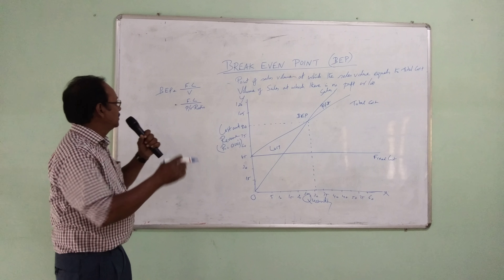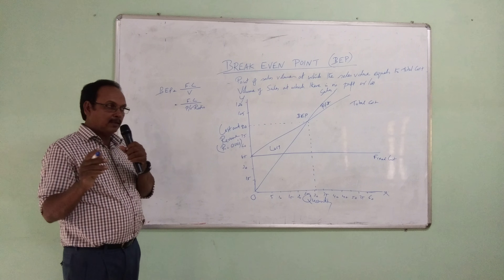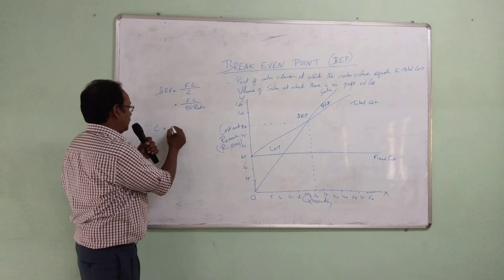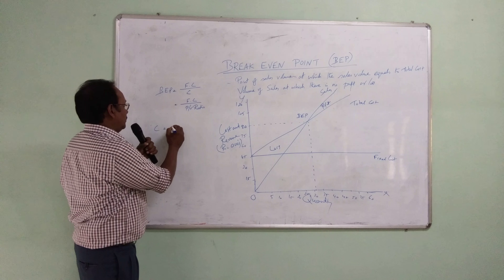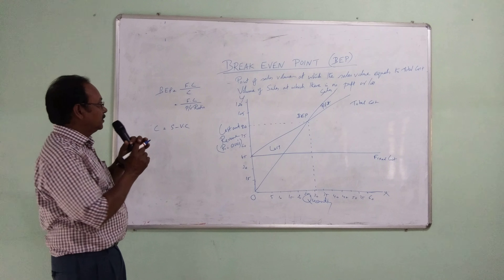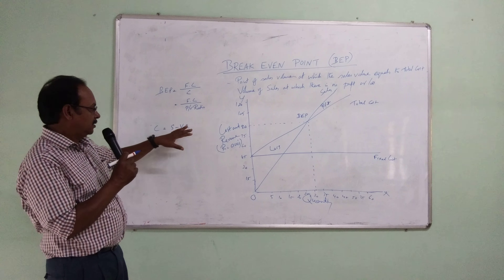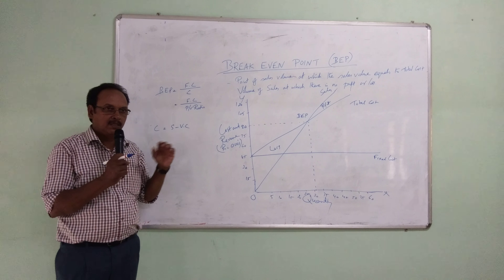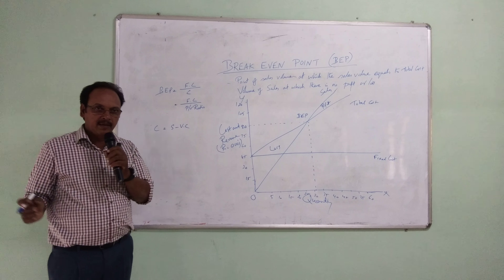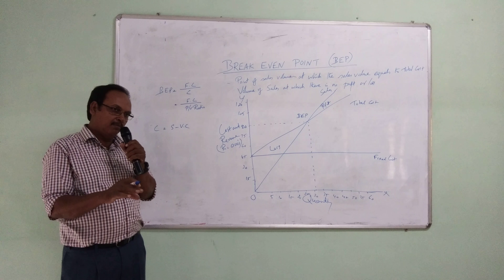The formula for BEP is: BEP equals total fixed cost divided by contribution per unit, where contribution per unit equals sales per unit minus variable cost per unit. By applying this formula, you will get the BEP in quantity. If you apply the sales value instead, you will get the BEP in value.